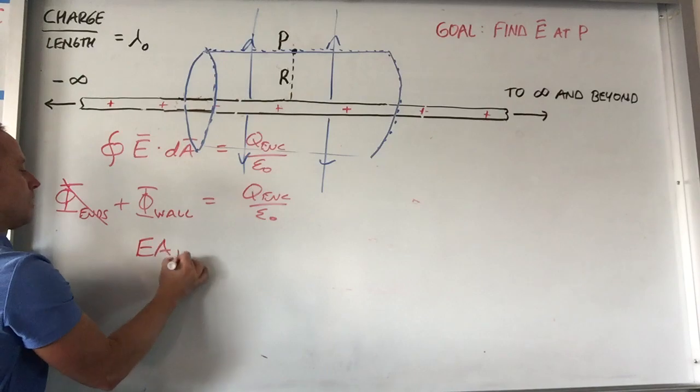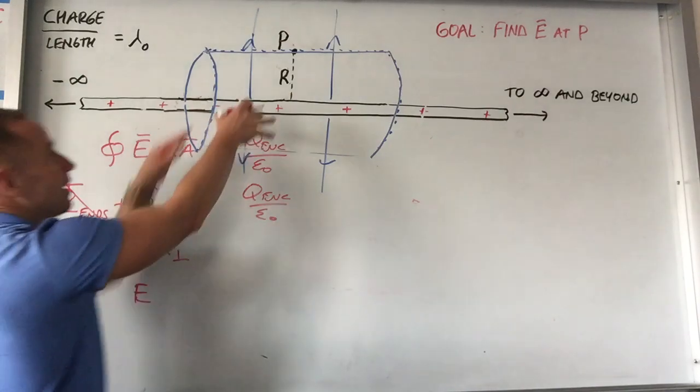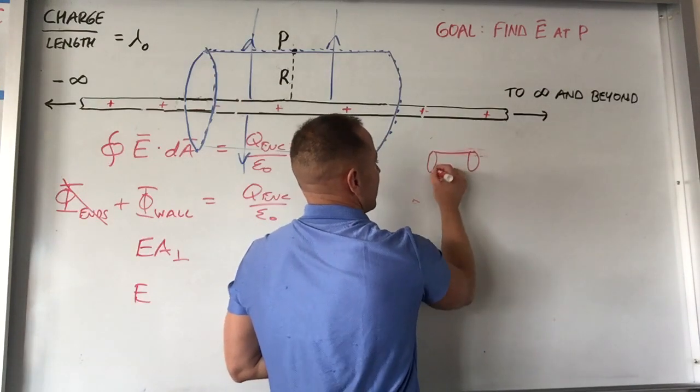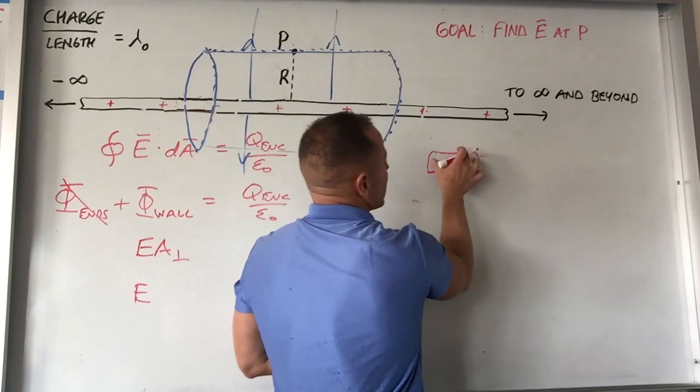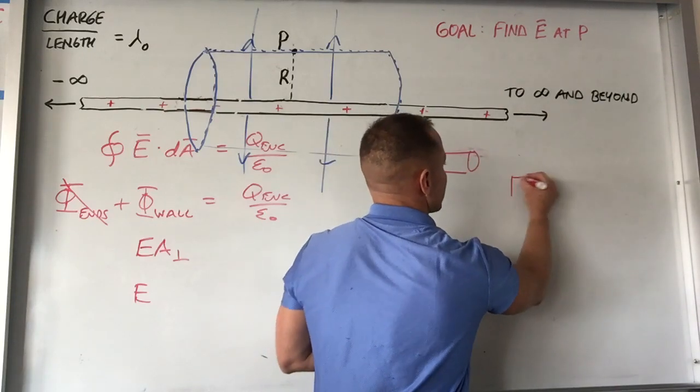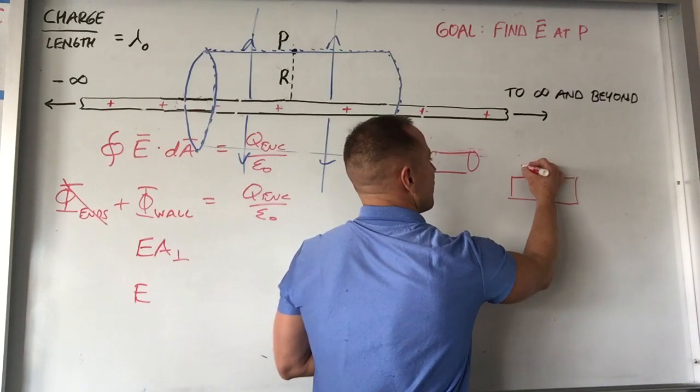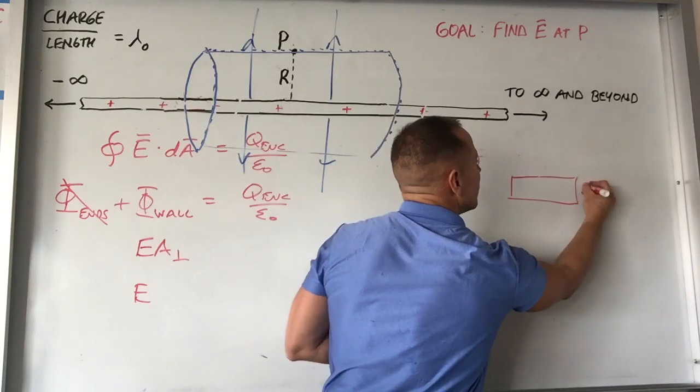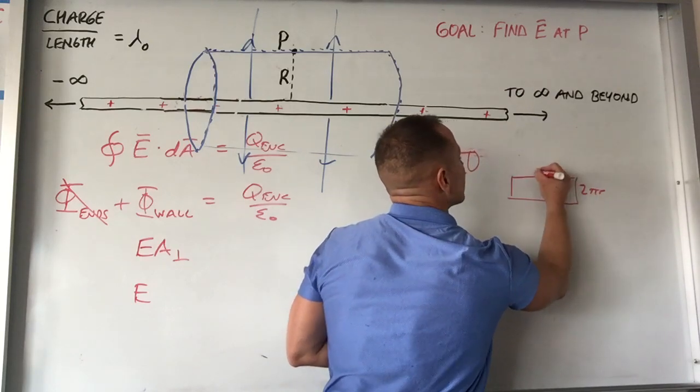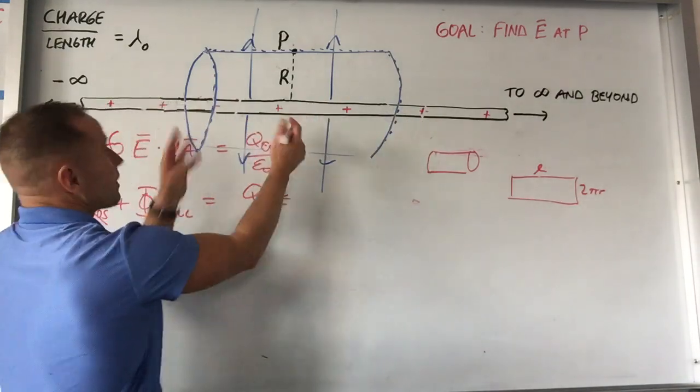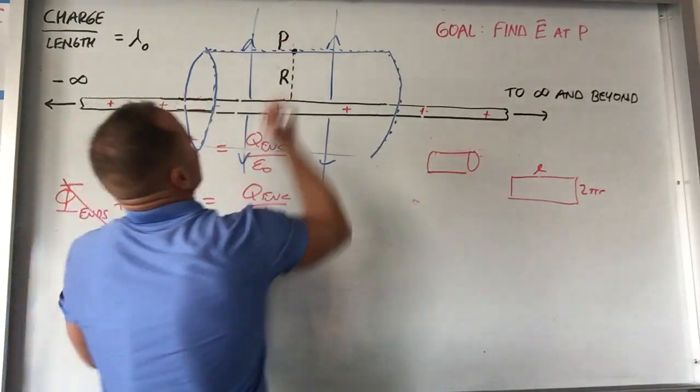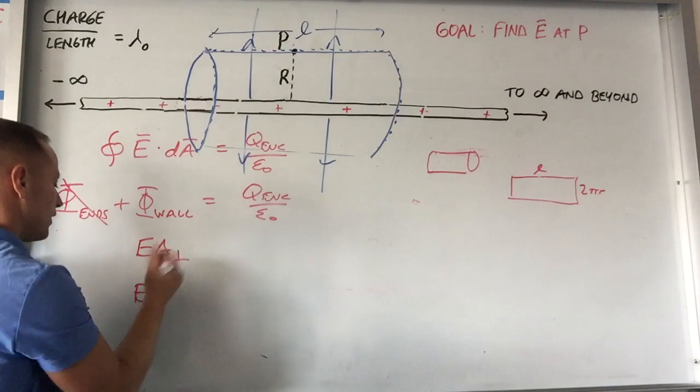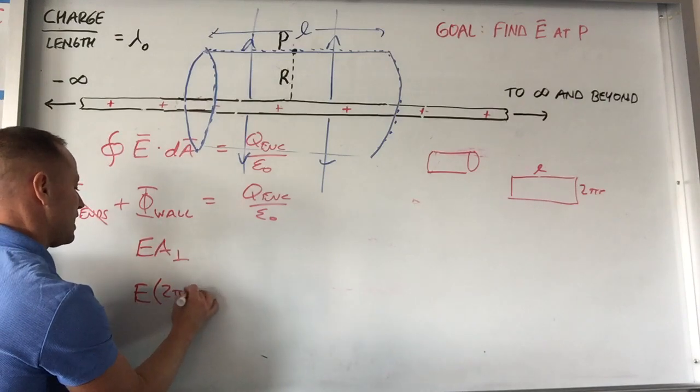Right? If you have a can, I'm redrawing like a little can down here. If you take the label off the can, like imagine cutting it and stretching it out, the Campbell soup label, this would be two pi. One dimension would be two pi r if you unravel it. And then the other dimension would be L, right? The length of the cylinder. So we better define that. So this will just be E times two pi r L, right?